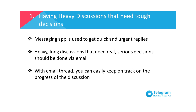Number one: heavy discussions that need tough decisions. Apart from connecting people, messaging apps are used to get quick and urgent replies as the messages are sent and received in real time. So when it comes to work-related topics that require quick decisions, the recipients are expected to reply to the messages as soon as possible.